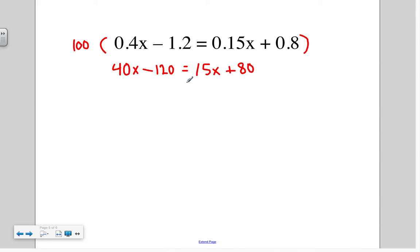Alright, so getting x alone on one side, I'm going to draw my line. I'm going to subtract 15x from both sides. And I get 25x minus 120 equals 80. I'm going to add 120. I'm going to get 200.